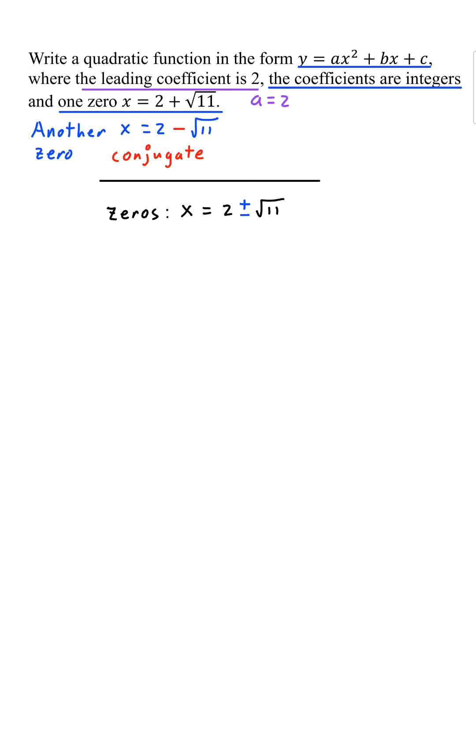Now, we can rewrite both zeros together as x equals 2 plus or minus square root 11. Let's take this and subtract 2 from both sides. We're going to square both sides.